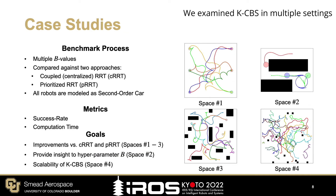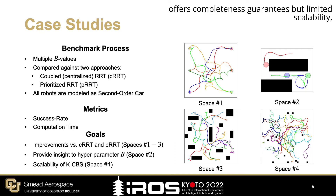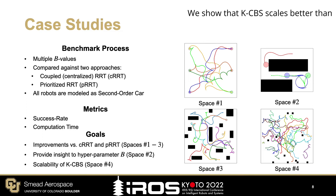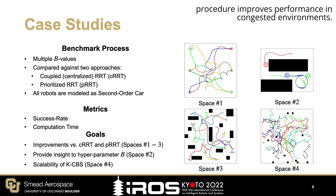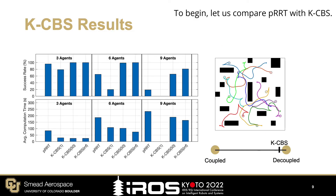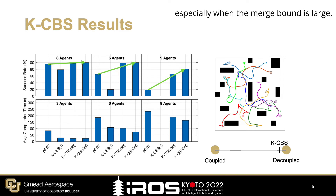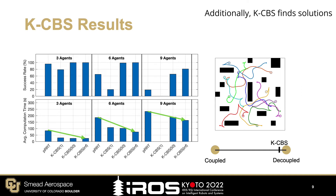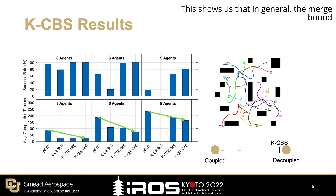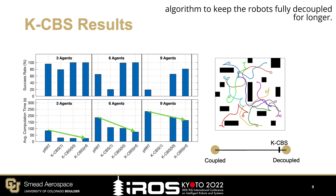We examined KCBS in multiple settings against two approaches: coupled RRT, which offers completeness guarantees but limited scalability, and prioritized RRT, an incomplete decoupled algorithm that offers improved scalability. We show that KCBS scales better than both algorithms, and the merge and restart procedure improves performance in congested environments. KCBS outperforms PRRT in success rate, especially when the merge bound is large. Additionally, KCBS finds solutions much faster than PRRT. In general, the merge bound for KCBS should be large because it enables the algorithm to keep the robots fully decoupled for longer.